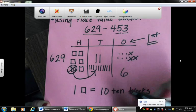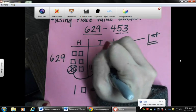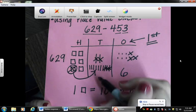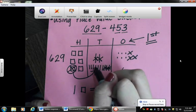So now we can take away five. So one, two, three, four, five. And we're going to count how many tens blocks we're left with. One, two, three, four, five, six, seven.